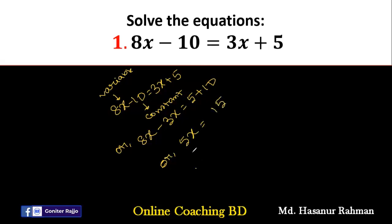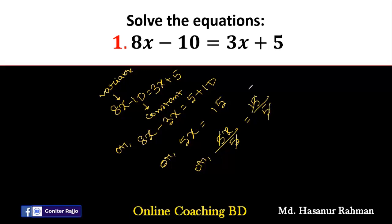Now we have to divide both sides by 5. If we divide both sides by 5, we can divide 5 by 5 and 15 by 5, that will be 3. So our final answer will be x equal to 3.